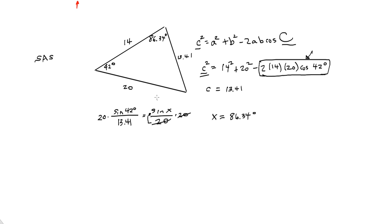And to find our third angle, we can add our two angles together to get 128.34 and subtract from 180 degrees and you get 51.66 degrees. Again, rounded to two decimal places.